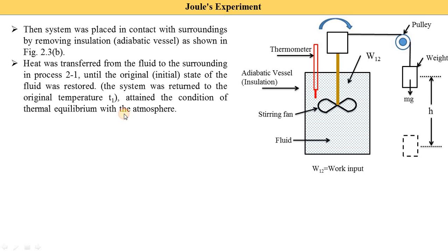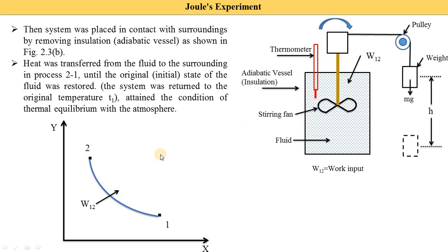Heat is transferred from the fluid to the surroundings in process 2 to 1 until the original state of the fluid is restored. The state returns to the original temperature T1 and attains thermal equilibrium with the atmosphere. For this second process 2 to 1, we draw the diagram from state 2 back to state 1, during which the system rejects heat Q₂₁ to the atmosphere.